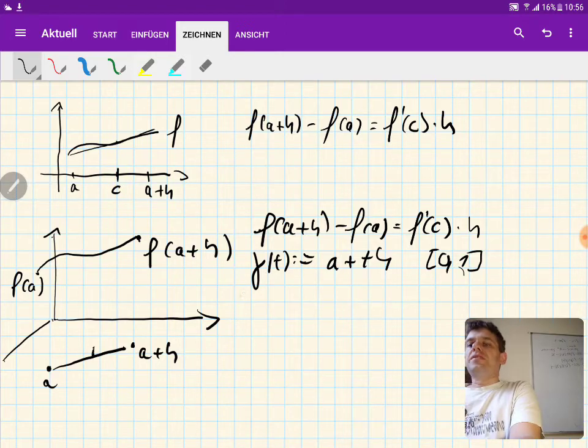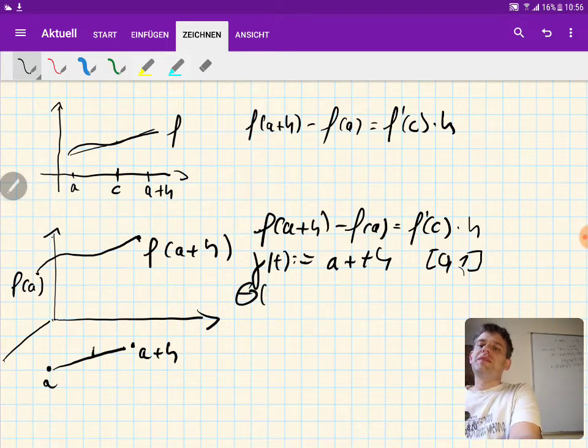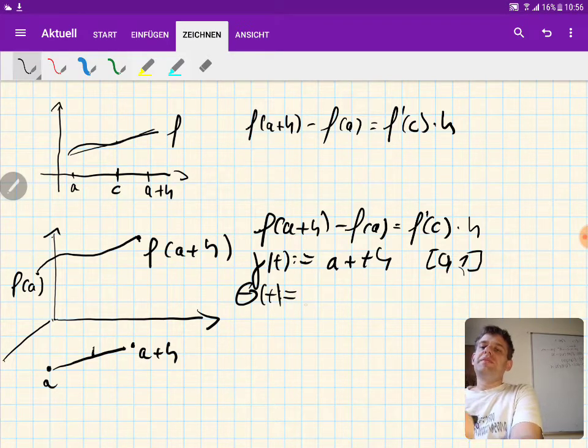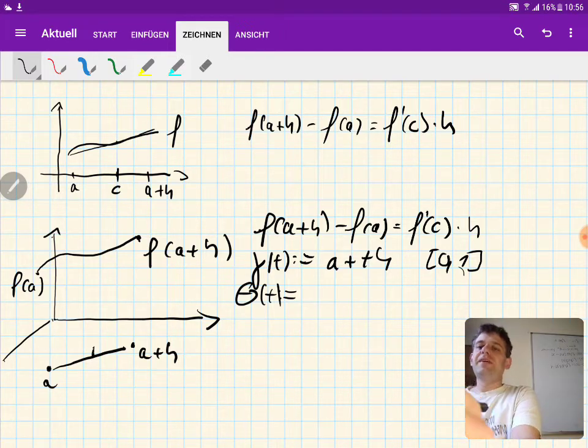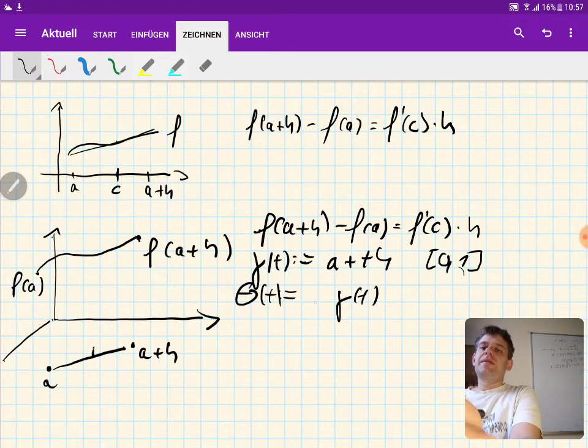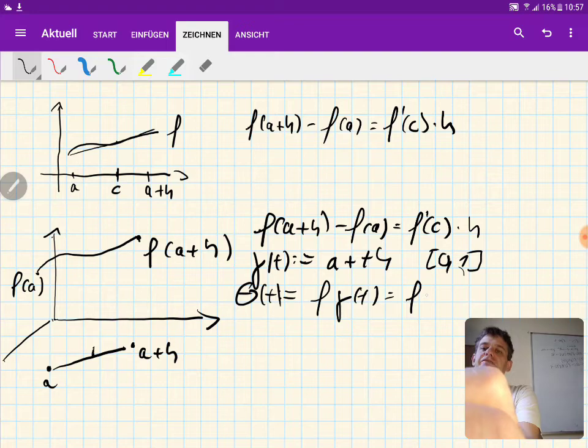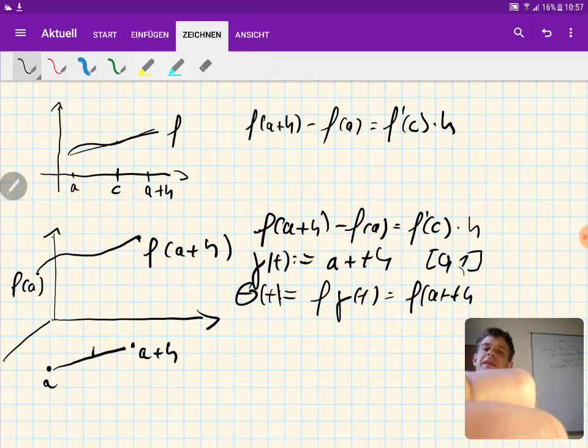And we introduce a second function theta, which is also a function of t, and theta is defined to be just the composition of this function gamma and our old function f. So theta is f of gamma of t, which we can also write as f of a plus th.